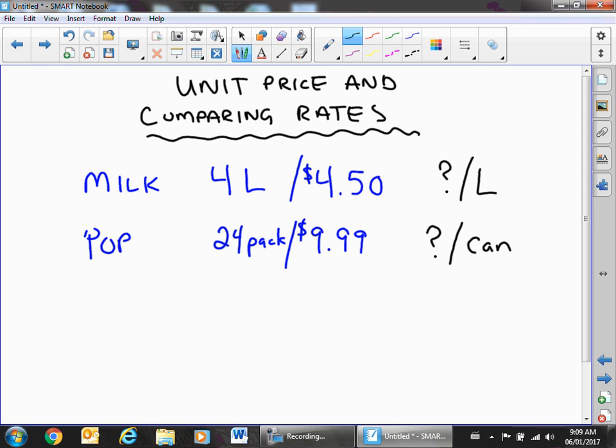Okay, so this is the most common thing that you'll probably deal with on a daily basis, going to a grocery store and you're going to see that they have certain rates that are out there. So, for example, you see milk and it's for sale for four liter of milk for $4.50 and pop might be on sale for a 24-pack for say, $9.99.